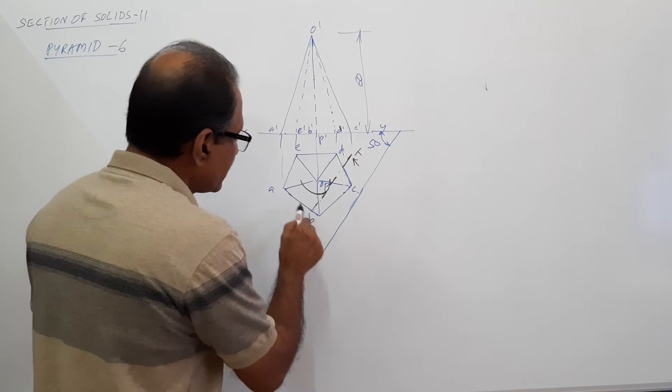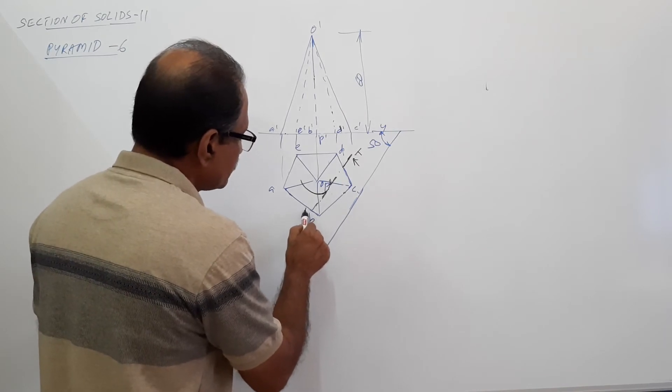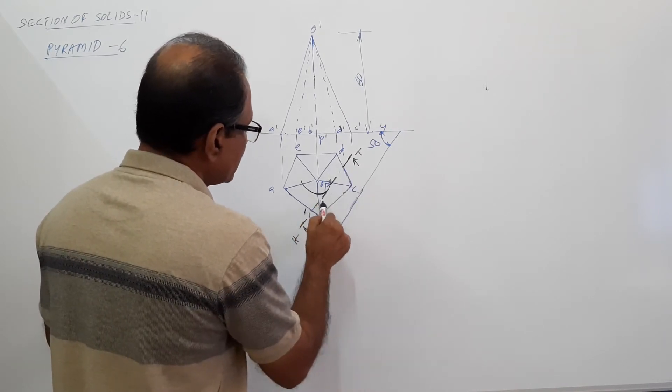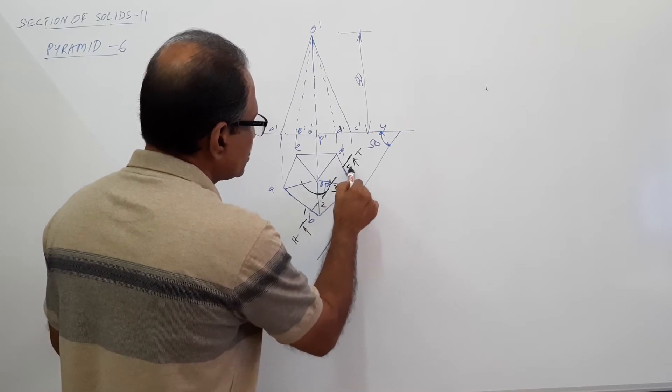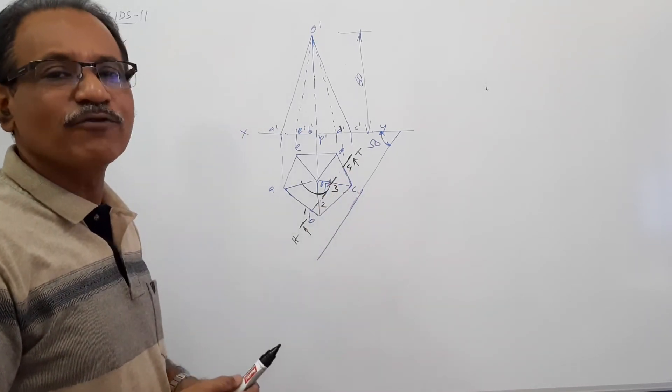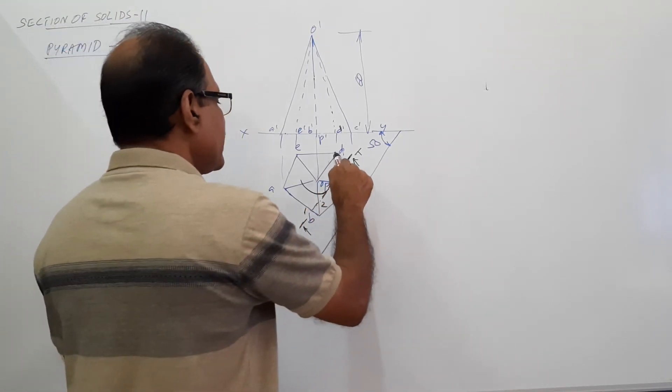Then it cuts the base. AB is 1 and here this is 2, this is 3, this is 4. Only 4 points. What will you dark?